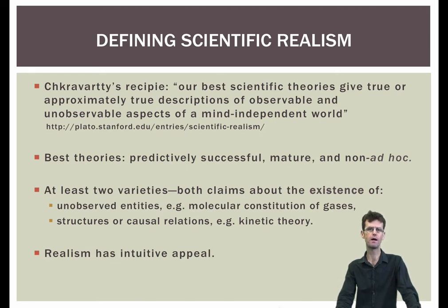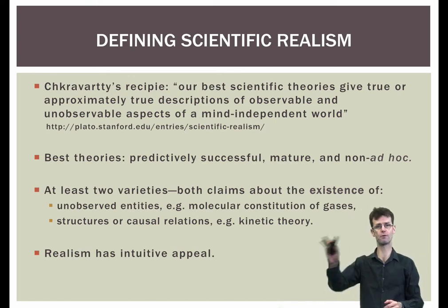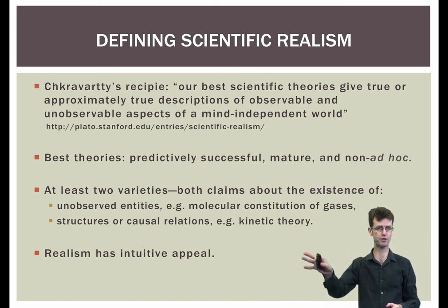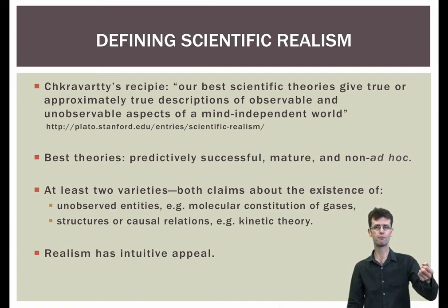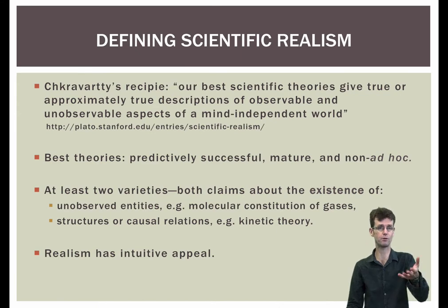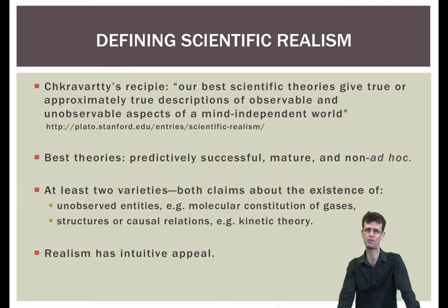The kinds of claims realists make are existence claims, and they might be about at least two things: the kinds of things there are out there, and the cause-and-effect relationships that structure interactions between those things. So there are at least two varieties of realism. Realism about unobserved entities — for example, the claim that gases are made up of molecules, i.e. the molecules and gases actually exist — and realism about cause-effect relationships.